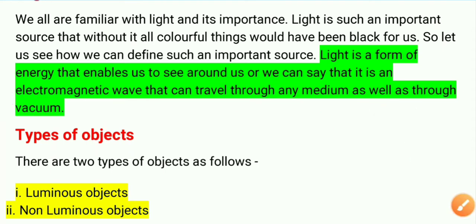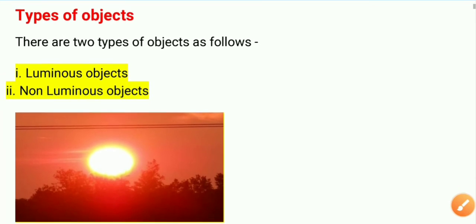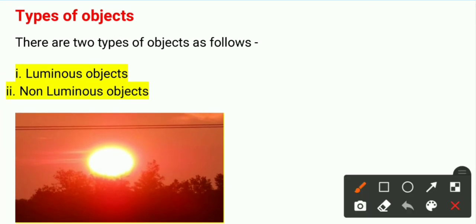Now let's read the next concept given in NCERT — types of objects on the basis of light. Objects are of two types: the first is luminous objects and the second is non-luminous objects. Luminous objects are those which have their own light, such as the sun.